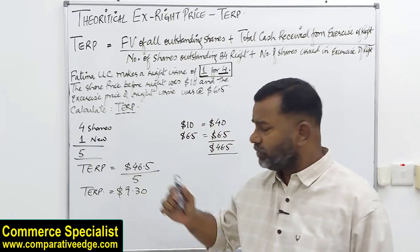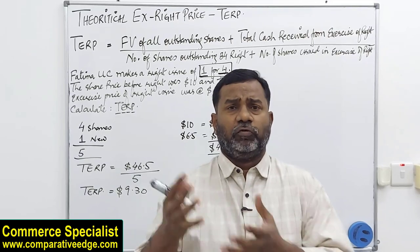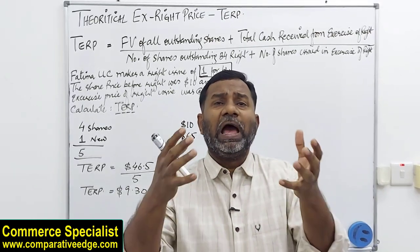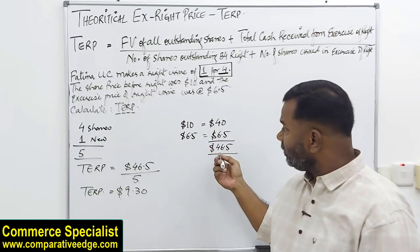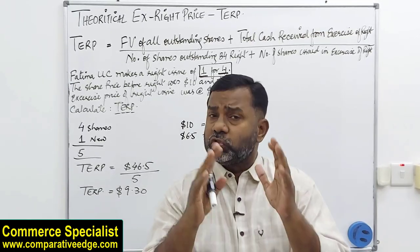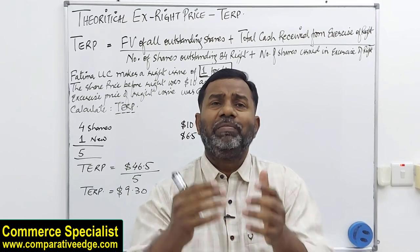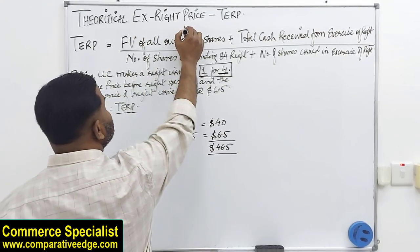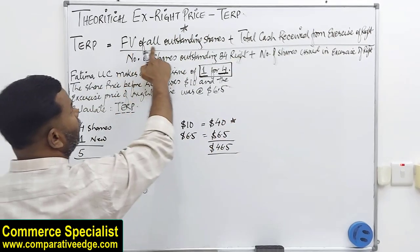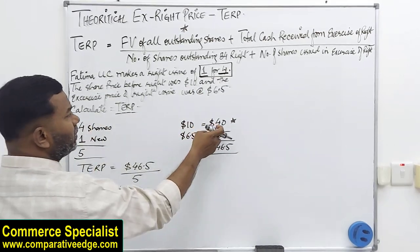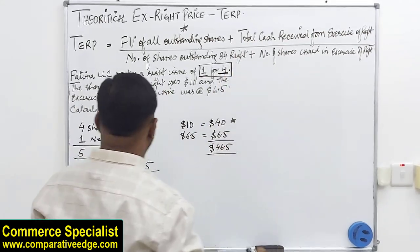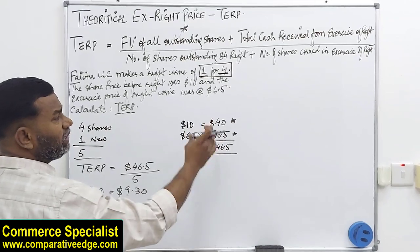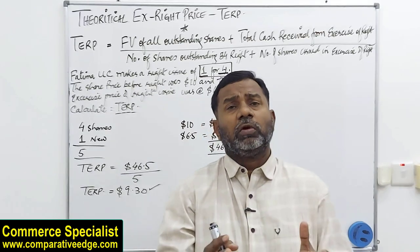What does $9.30 mean? If I am a shareholder with 4 shares at $10 each and I buy 1 new share at $6.50, my average cost of all 5 shares after the right issue will be $9.30. Most of the time the theoretical ex-rights price will be less than the price of shares before the exercise of right. This figure represents the face value of all outstanding shares before the right, plus the cash received from the exercise of right — and you can calculate it in terms of all shares, but the answer will come to $9.30.